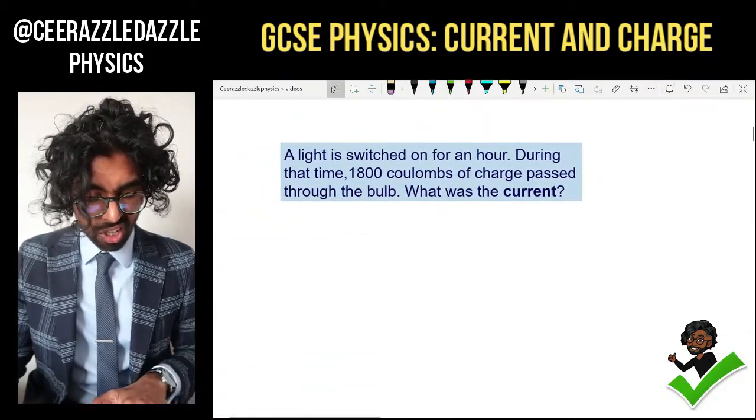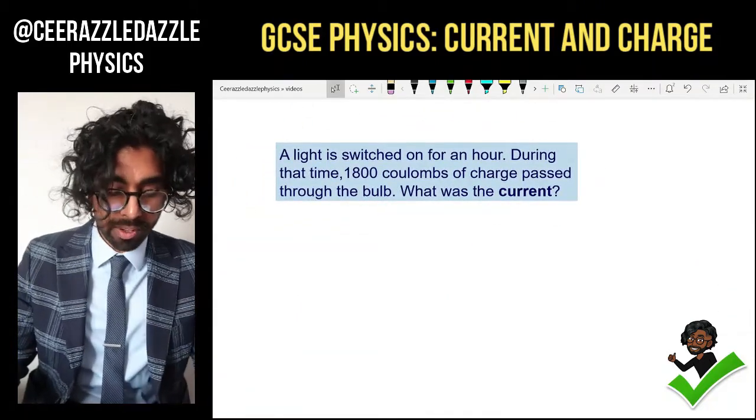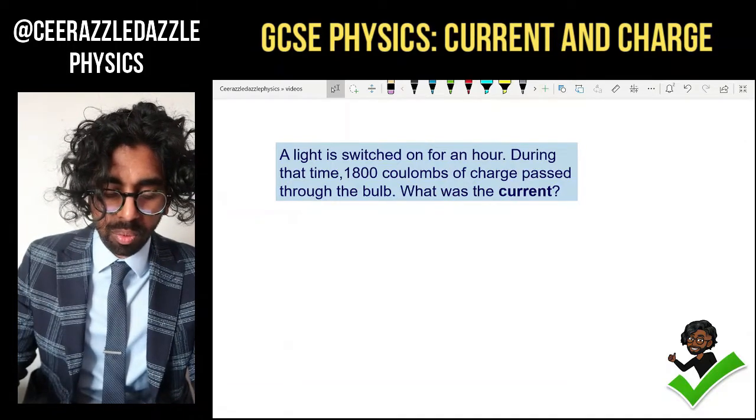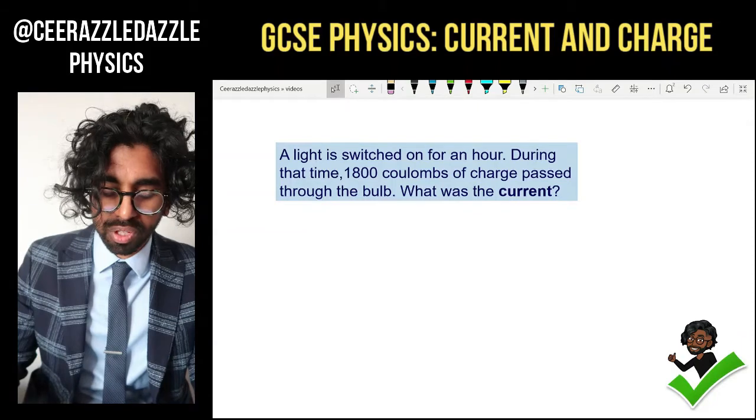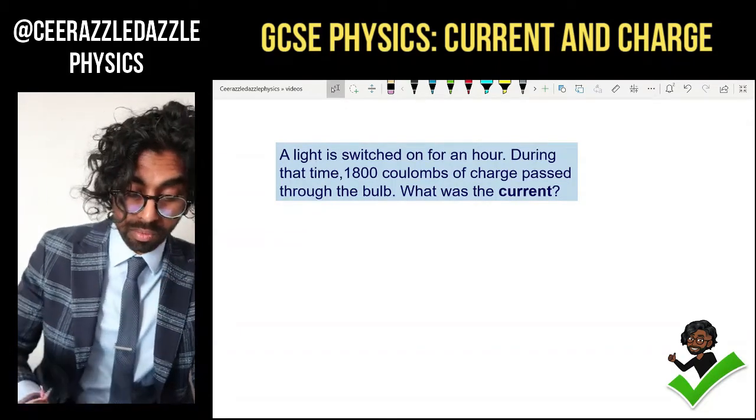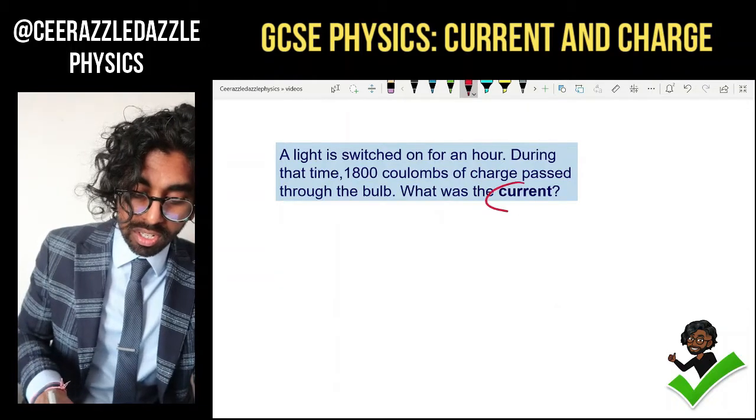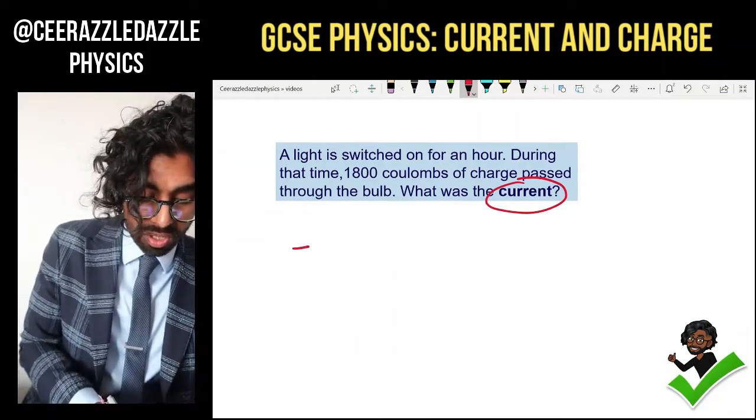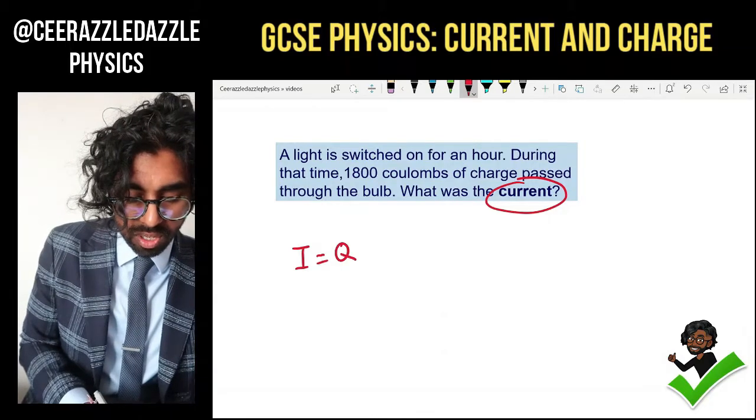Now let's try to do a question using that formula. So a light is switched on for an hour. During that time, 1,800 coulombs of charge pass through the bulb. What is the current? So what are they asking for? They're trying to get you to work out the current. So we know that current is equal to charge divided by time.